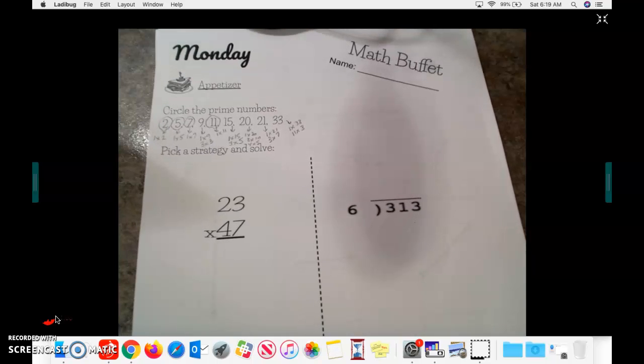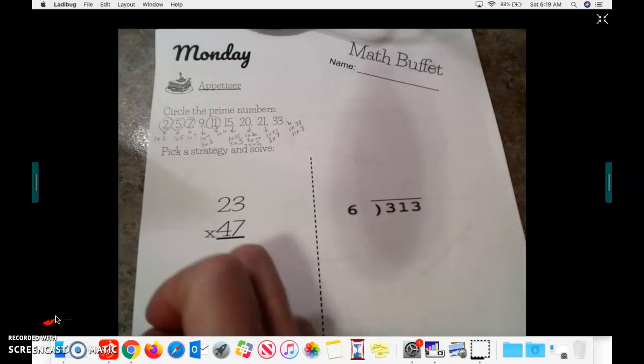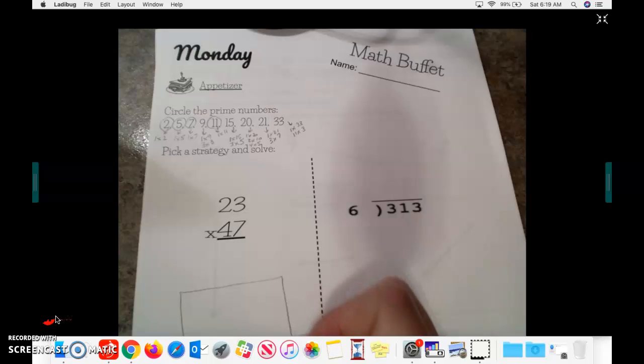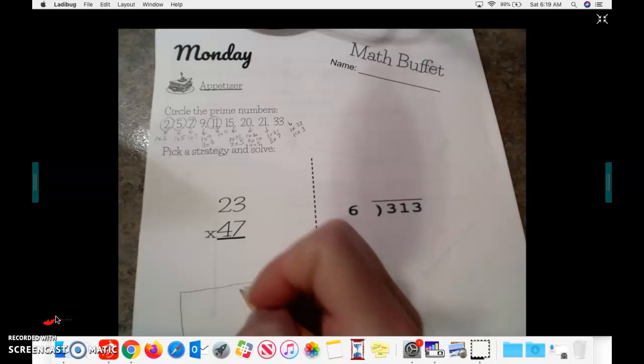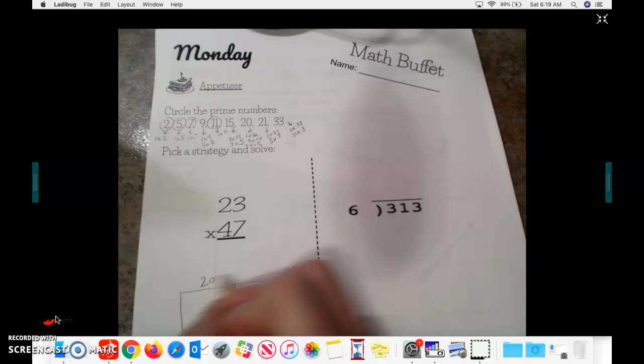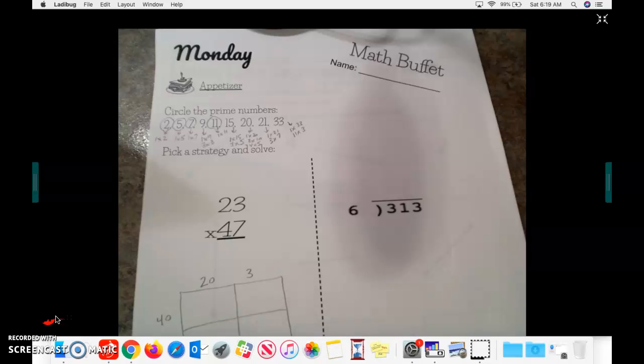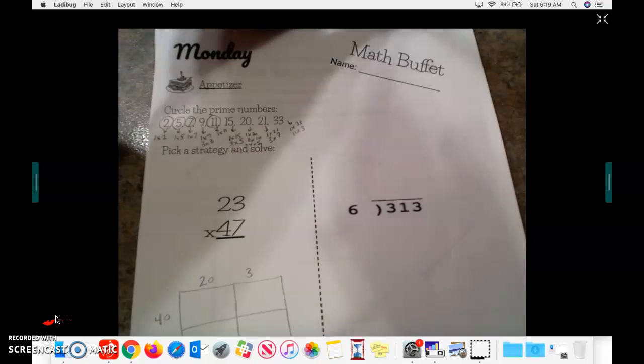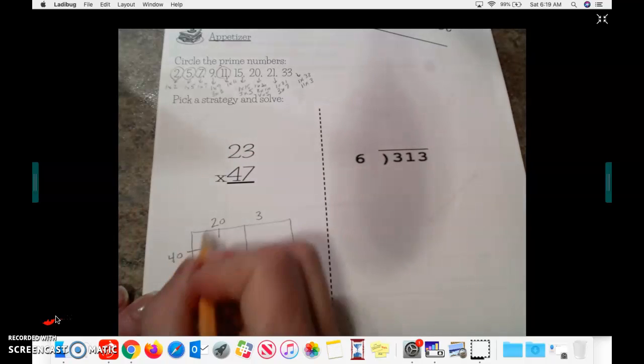For multiplication, I'm going to choose to use the box method for this. Again, the strategy is up to you. We just want you to confirm that you have the correct answer. So I'm going to have 20 and 3, and 40 and 7. When I do 20 times 40, I'm going to do 4 times 2 is 8. And then I have two zeros.